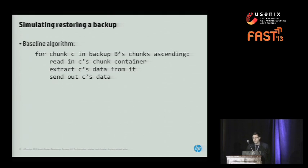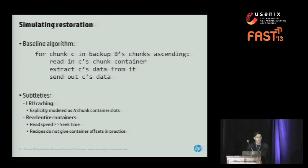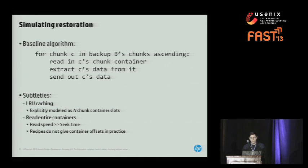How do we simulate restoring a backup? The baseline algorithm is fairly simple: we iterate through all the chunks in the backup in order, read in each chunk's container, extract the chunk's data, and send it out to the client. For this to run fast enough, you need some kind of caching — we assume LRU caching. We explicitly model the cache as N chunk container slots. Less obviously, this algorithm reads entire containers, not just individual chunks, for two reasons: read speed on modern I/O systems is so much larger than seek time that reading extra data is essentially free, and many recipes don't actually give container offsets, so you read the whole container and consult its index.